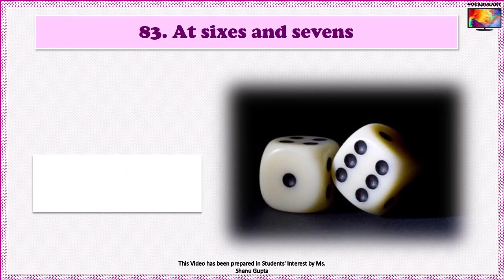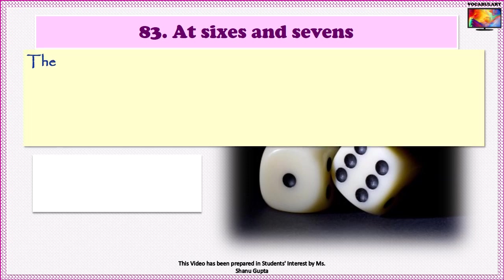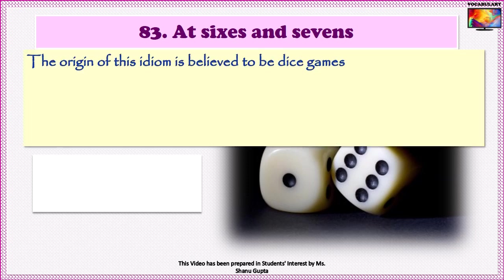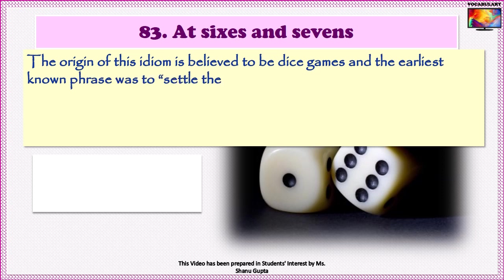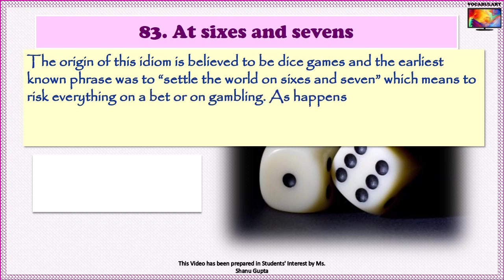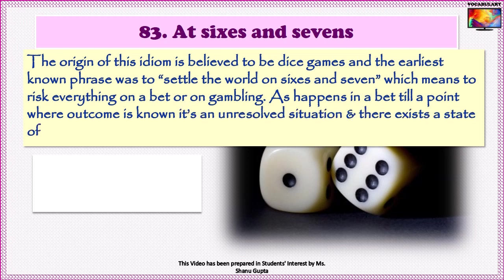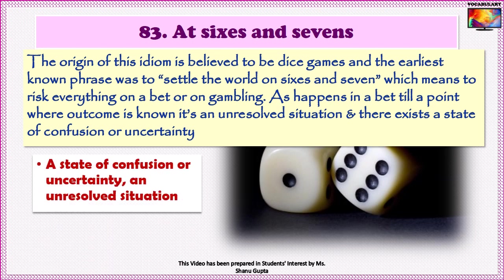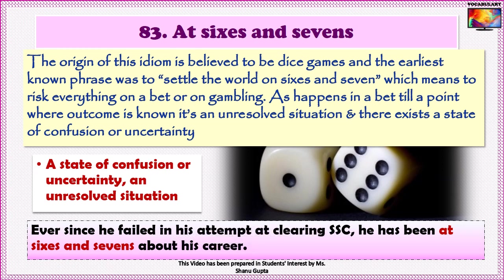The next idiom is 'At sixes and sevens.' The origin of this idiom is believed to be dice games — the earliest known phrase was 'to set the world on sixes and sevens,' meaning to risk everything on a bet. As happens in a bet, until the outcome is known, it is an unresolved situation with a state of confusion or uncertainty — which is what this idiom means. For example: 'Ever since he failed in his attempt at clearing SSC, he has been at sixes and sevens about his career.'